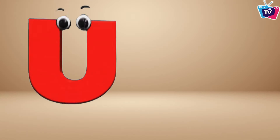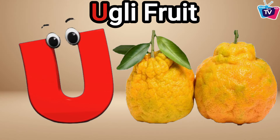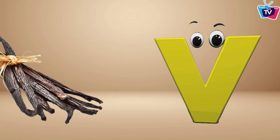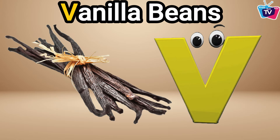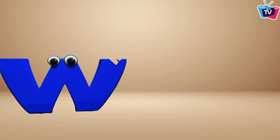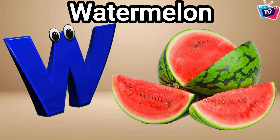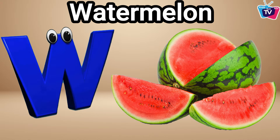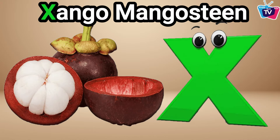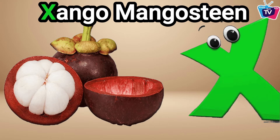U is for ugly fruit, uh-uh-uh ugly fruit. V is for vanilla beans, v-v-v-vanilla beans. W is for watermelon, w-w-w-watermelon. X is for xango mangosteen, x-x-xango mangosteen.